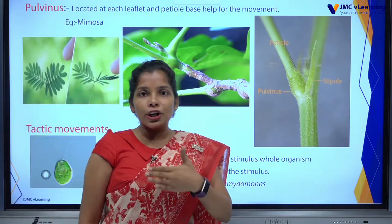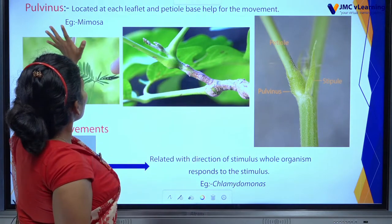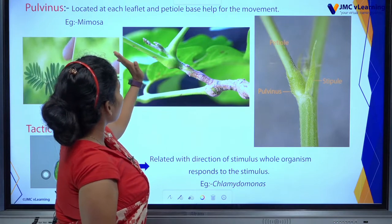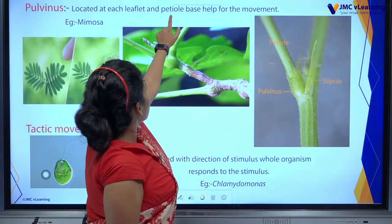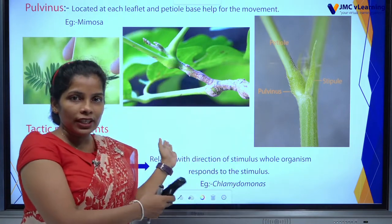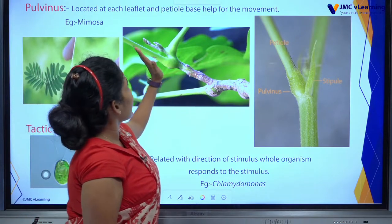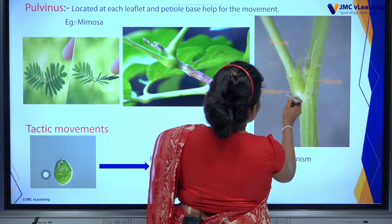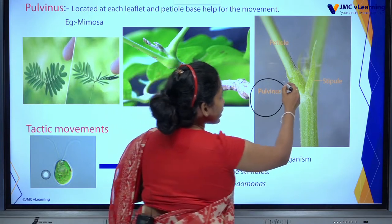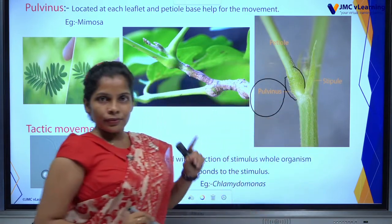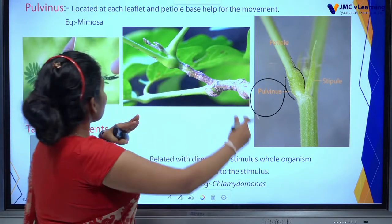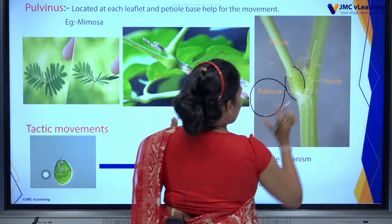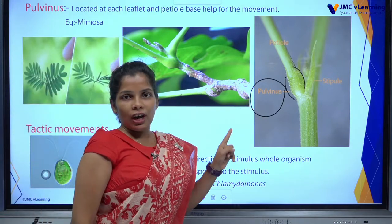There is a famous point called Pulvinus — maybe you are hearing this for the first time. Pulvinus is located at each leaflet and petiole base, and it helps with movement. You are familiar with the words petiole and leaflet from Grade 7. Look at this diagram — it nicely shows the pulvinus located at the leaflet and the petiole.